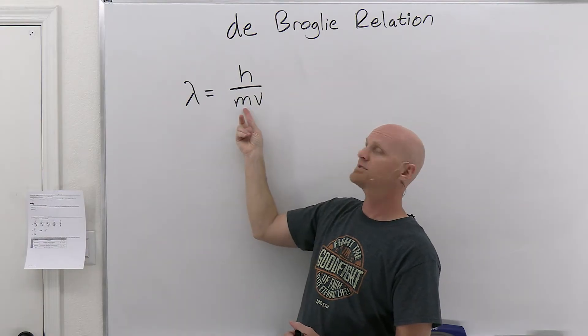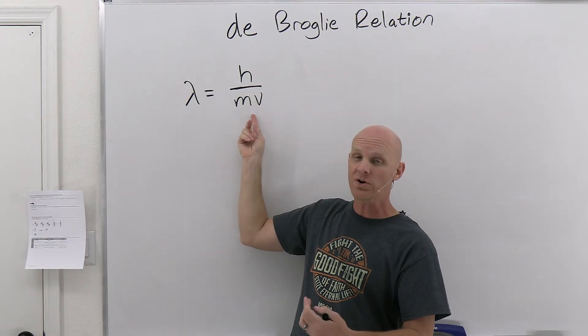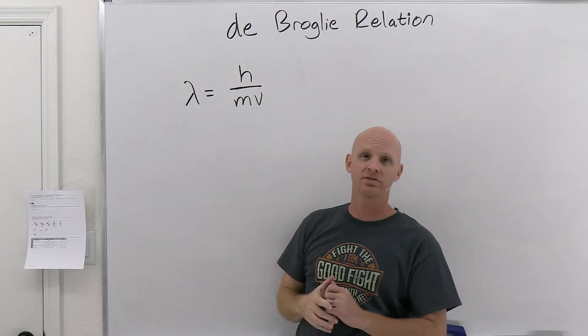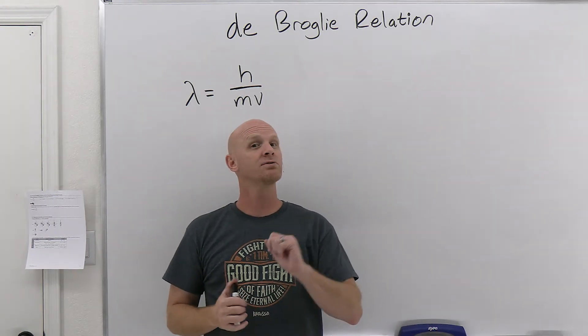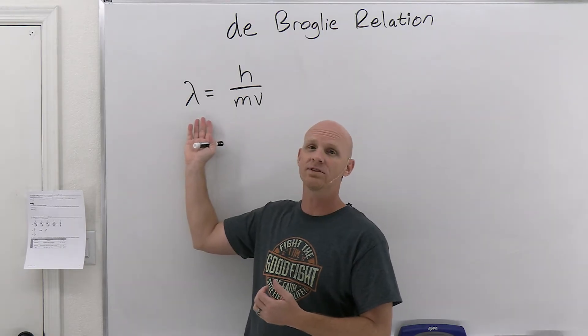H here is Planck's constant. M is the mass of whatever particle you're looking at, and then V is its velocity. So, and it turns out that for big things, you're not going to find it, but for little things like electrons, we actually can measure their wavelength.